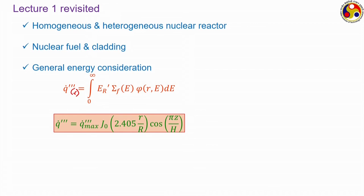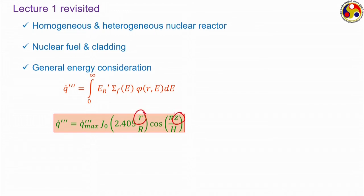We then discussed a specific case for a cylindrical reactor containing a large number of cylindrical fuel rods, where capital R is the radius of the reactor and capital H is the height of the cylinder. Accordingly we obtained a solution for the heat generation that is a function of both R (the radial coordinate) and Z (the axial coordinate).